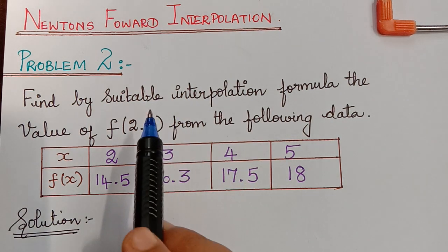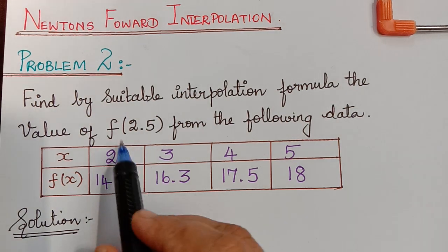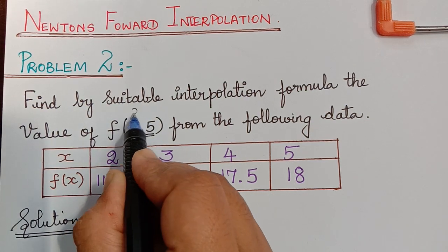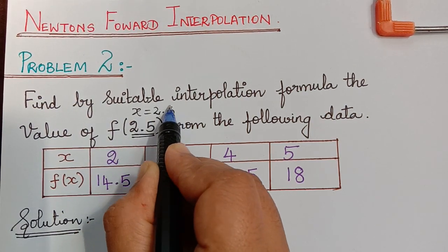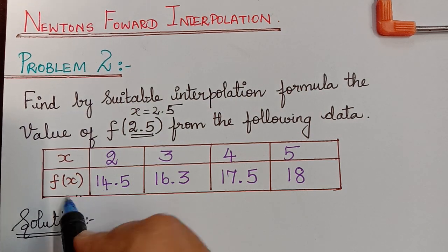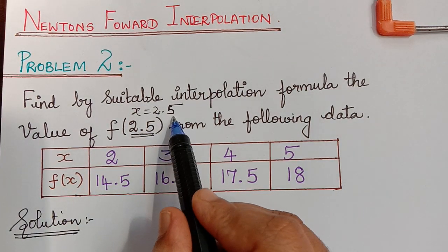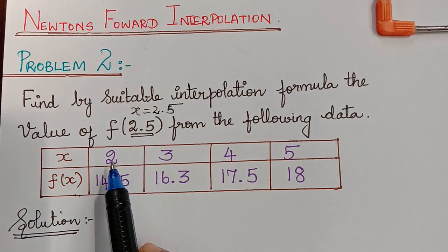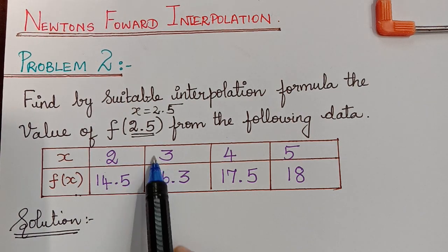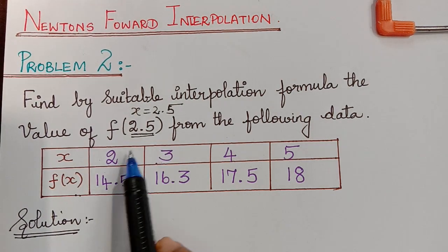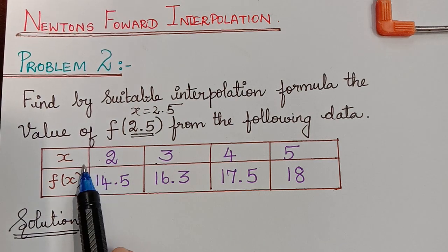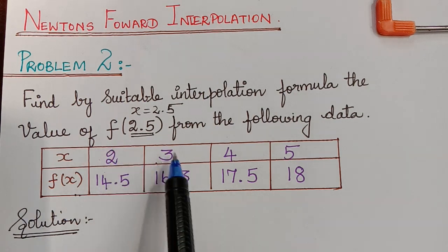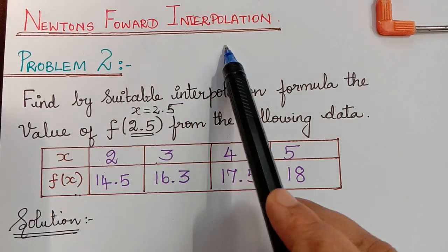The value to be interpolated is f of 2.5, that is, for x equal to 2.5, we have to interpolate the value of y, which is f of x. Now, 2.5 lies between 2 and 3, which are the beginning values of x, so we understand that we have to use Newton's forward interpolation formula.